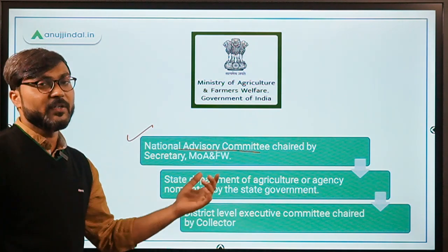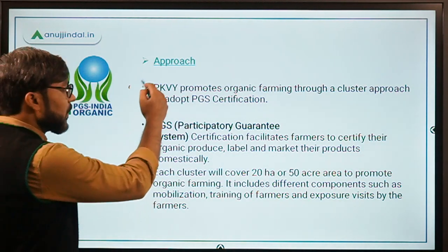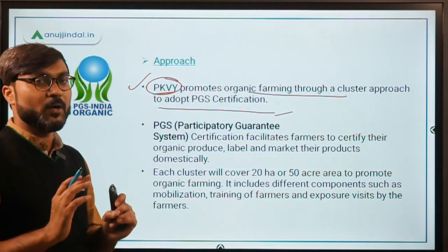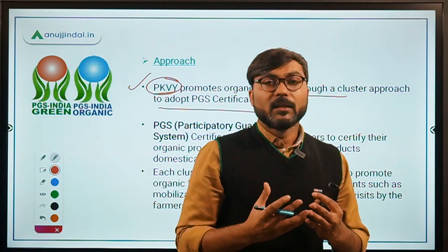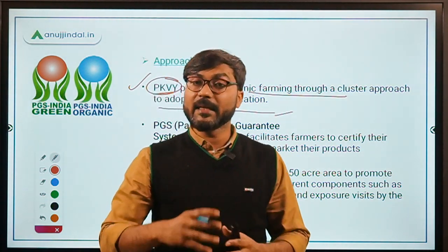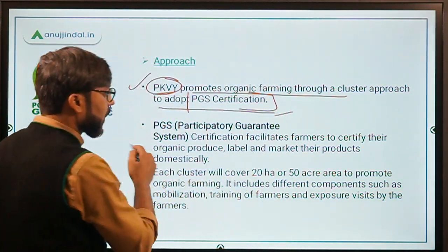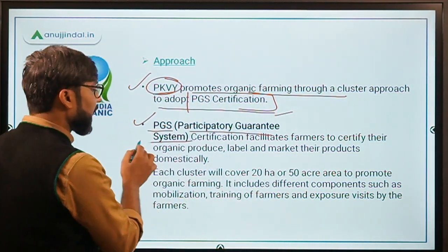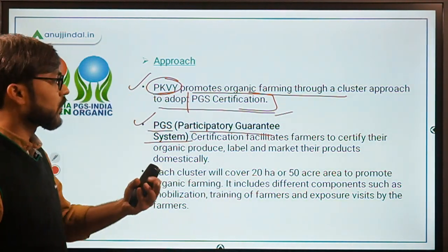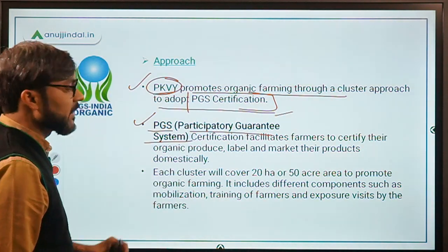Then we have the District Level Executive Committee, chaired by the District Collector. So the institutional mechanism has three levels: the National Advisory Committee headed by the Secretary of the Ministry of Agriculture and Farmers Welfare, the State Department of Agriculture or state-nominated agency, and the District Level Executive Committee headed by the District Collector. PKVY promotes organic farming through a cluster approach to adopt PGS certification. Farmers are provided incentives to use only organic inputs for agriculture.